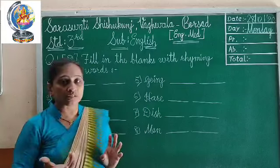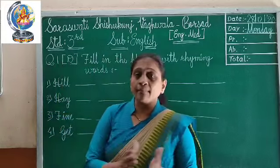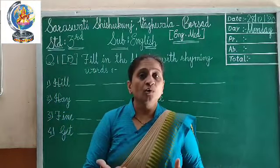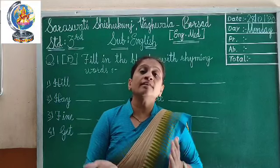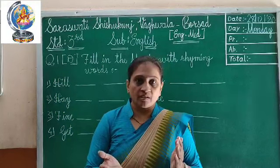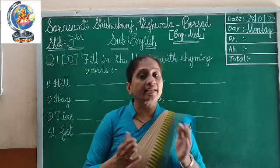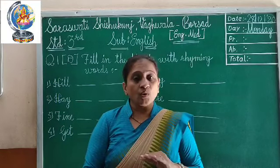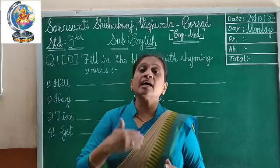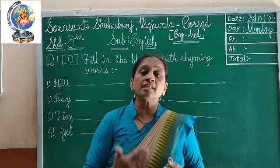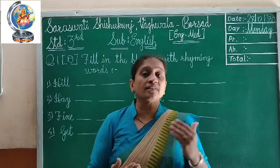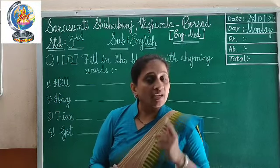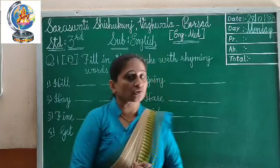Now, what are rhyming words? Rhyming words means whenever we are speaking words, they should be in rhyme. For example: hair, get, day, say — these are sounding the same. The rhyming of the sound and the spellings are the same.